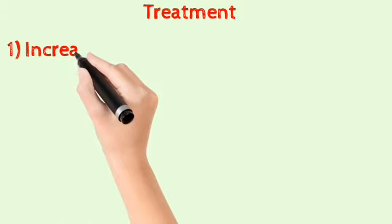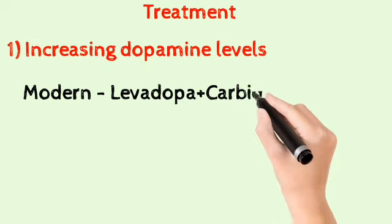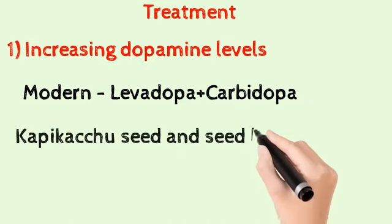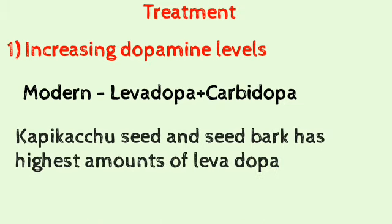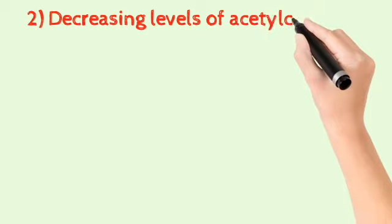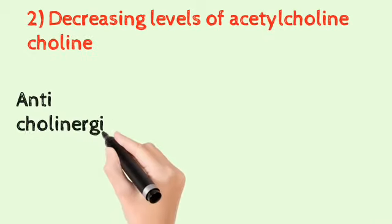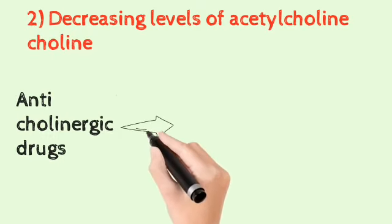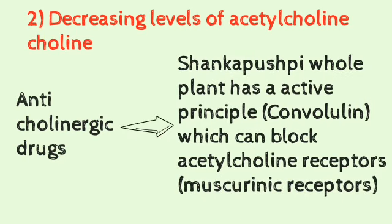The treatment strategies include increasing the levels of dopamine by administering the patient with levodopa and carbidopa. In Ayurveda, Kapikachu seed and Kapikachu seed bark can be used as a supplement for levodopa. One more strategy includes administering the patient with anticholinergic drugs. In Ayurveda, Shankapushpi, also called Convolvulus trilobus, has an important active principle found all over the plant that has an important effect on acetylcholine.